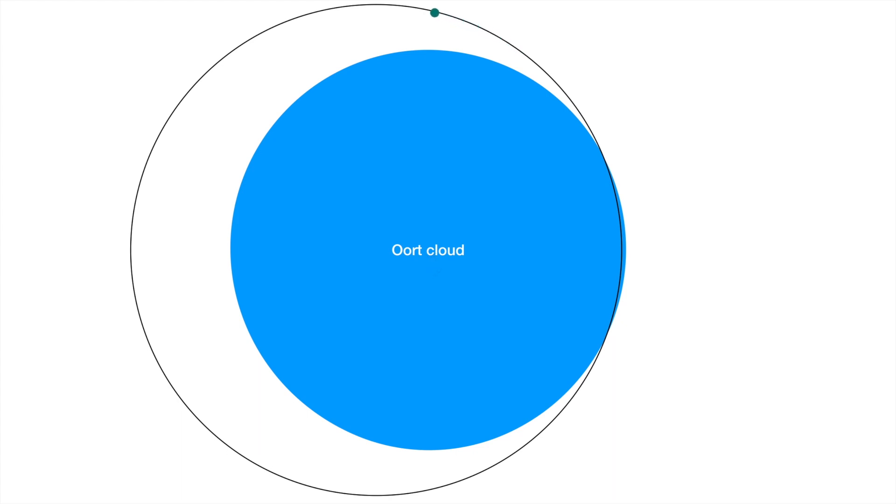Either nemesis got thrown out of the solar system, not likely, or it's not real, and the 26 million year coincidence is just a coincidence.